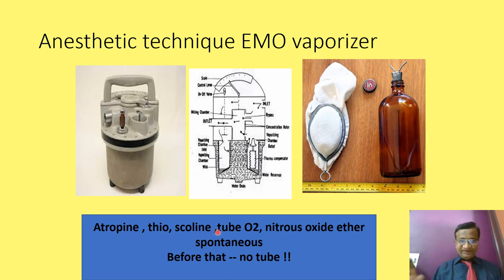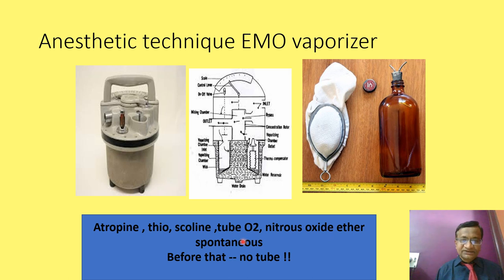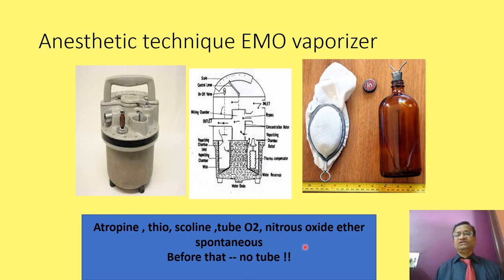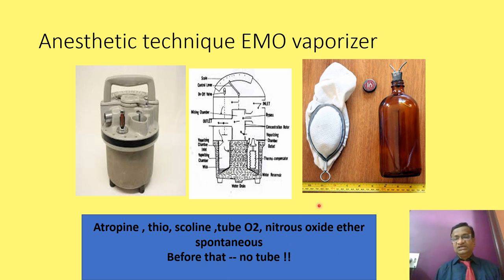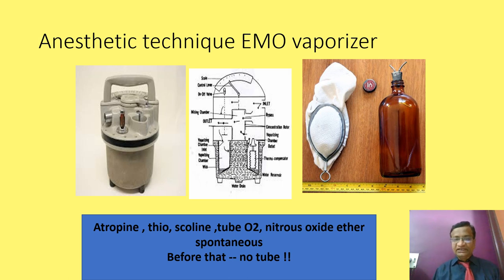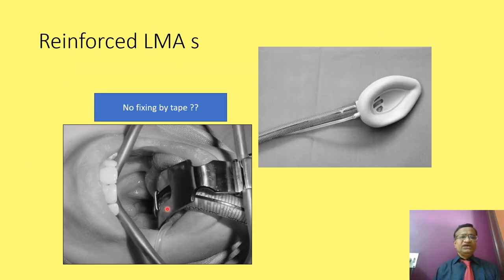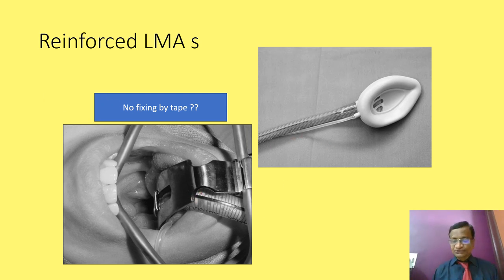The historical approach evolved to: atropine, thiopentone, suxamethonium, intubation, then ether for spontaneous ventilation — without muscle relaxants. As diathermy became widespread, this technique changed completely. We now use non-depolarizing muscle relaxants, with no ether. A reinforced laryngeal mask airway can also be used — some practitioners have moved to this, and studies show it is safer, simpler, and faster.